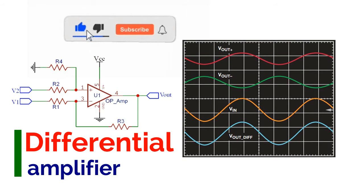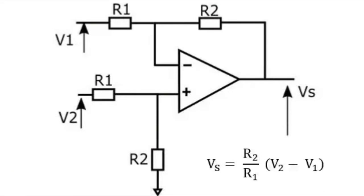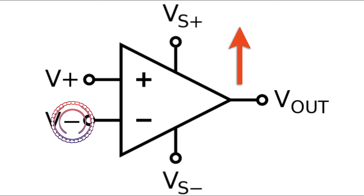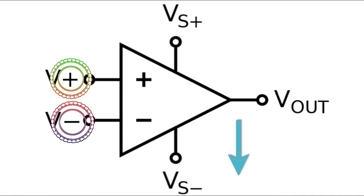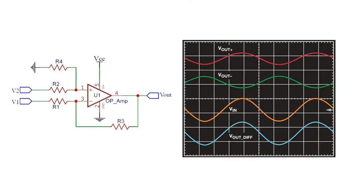6. Differential Amplifier. A differential amplifier is a type of electronic amplifier that amplifies the difference between two input voltages but suppresses any voltage common to the two inputs. It is an analog circuit with two inputs and one output.